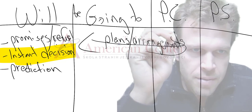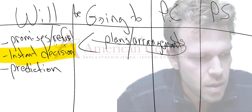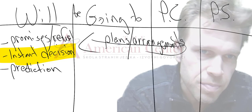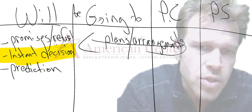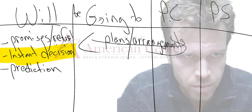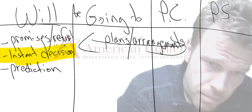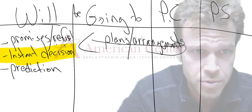These two, going to and present continuous, we should know the forms. We use for plans and arrangements. Now, what does this mean? This means, for example, if we have thought about something, we have decided, of course, then that means we know, and it is certain, more or less. So, for example, with going to, we're going to travel this weekend. It has been decided upon, and we have possibly made a plan in the book. It is our intent to do so.